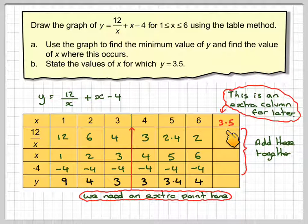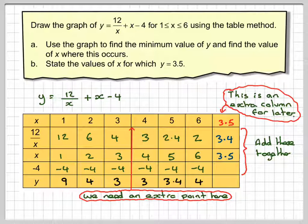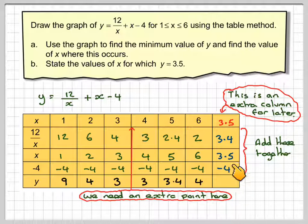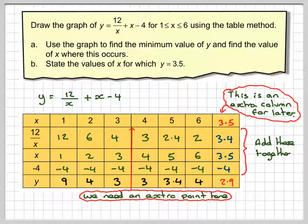12 divided by 3.5 is 3.4, correct to 1 decimal place, and that's probably the best we could do when we're plotting a graph. This is the same value as x, which is 3.5, and this here will be minus 4. So 3.4 plus 3.5 take away 4 gives me 2.9.